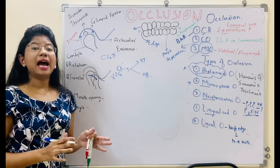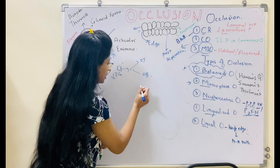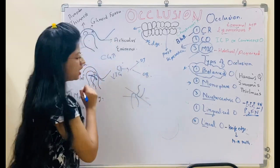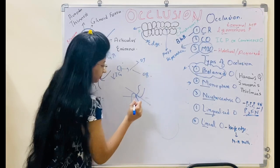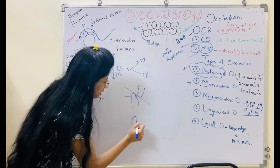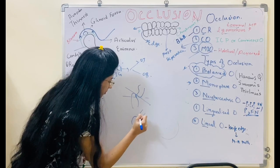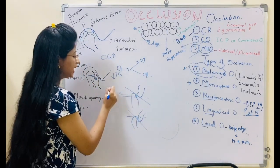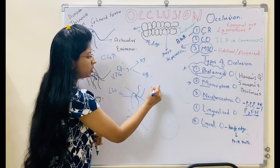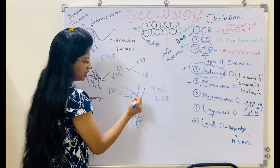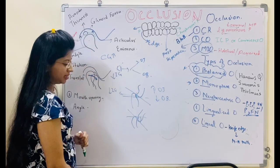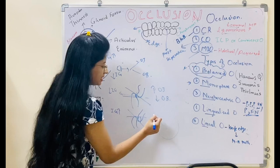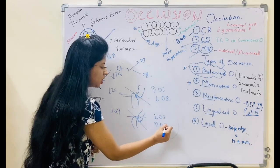To decrease incisal guidance, we need to increase the overjet and decrease the overbite. You can see increased overjet and decreased overbite in this case. Conversely, to increase the incisal guidance angle, we do the exact opposite: decrease the overjet and increase the overbite. Questions can be asked about overbite, overjet, or directly about incisal guidance.